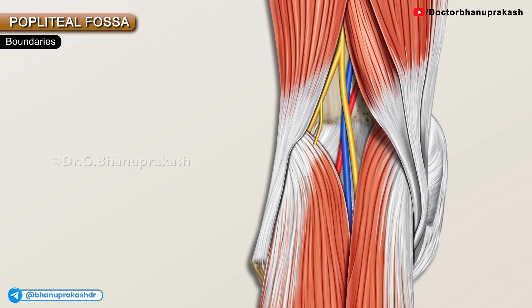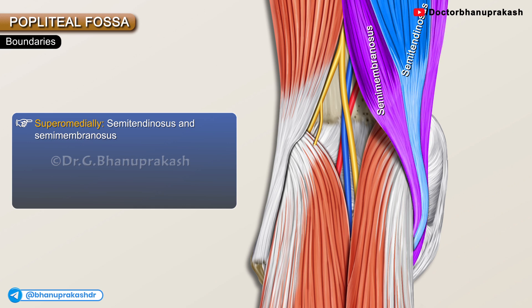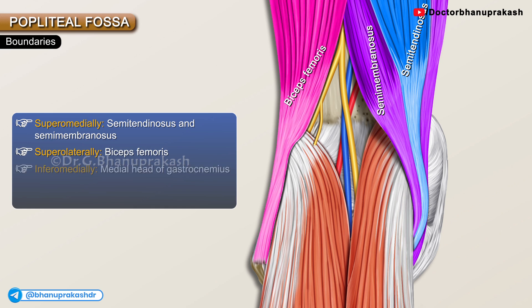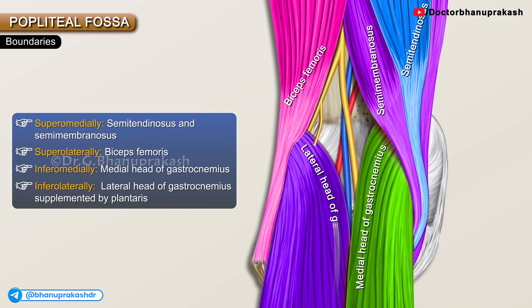The boundaries of the popliteal fossa: superomedially by semimembranosus and semitendinosus, and superolaterally by biceps femoris. The inferomedial boundary is formed by the medial head of gastrocnemius, and the inferolateral boundary is formed by the lateral head of gastrocnemius supplemented by plantaris.